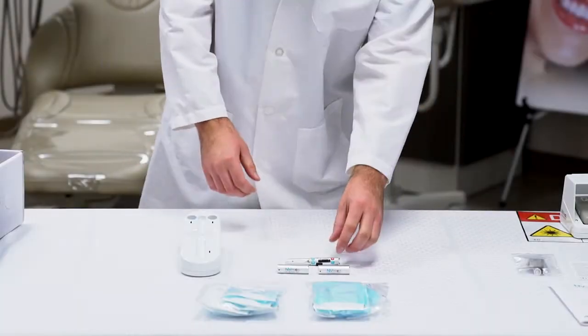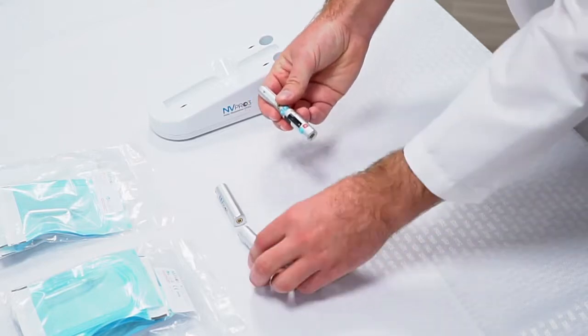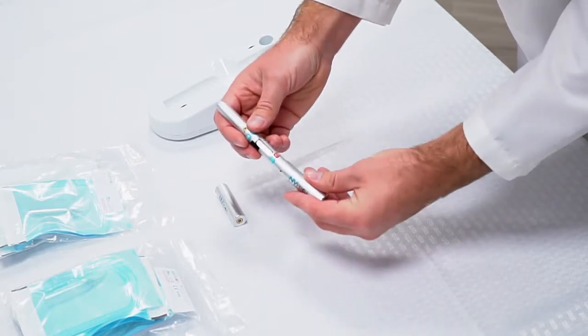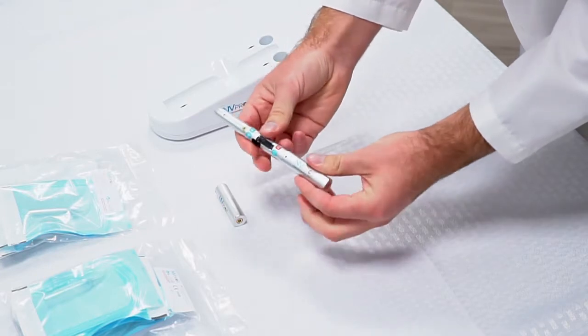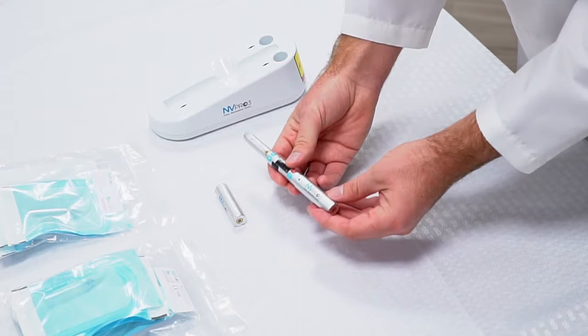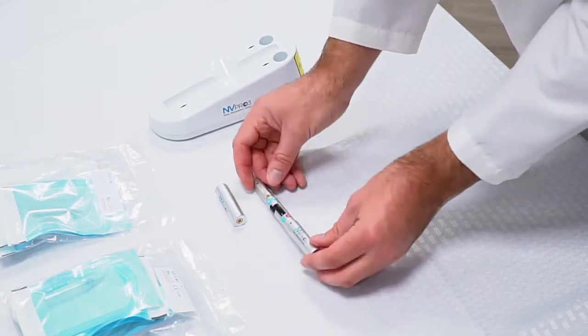Now to get started using your NVPro3, the first thing you'll want to do is take the NV wand and one of the supplied batteries and simply attach the battery and twist. This locks the battery onto the unit. The battery should come charged, so there's no need to charge them. You should be able to use this right out of the box.